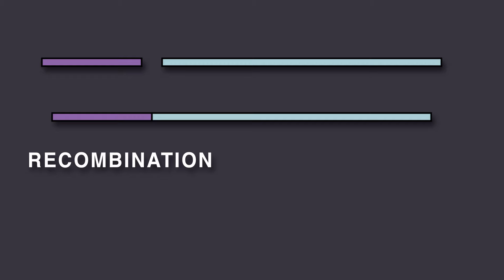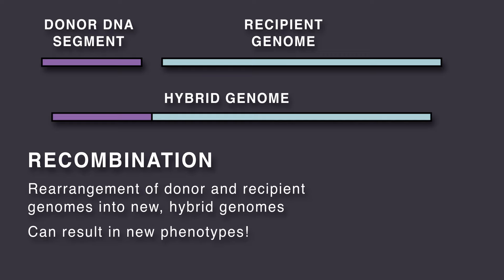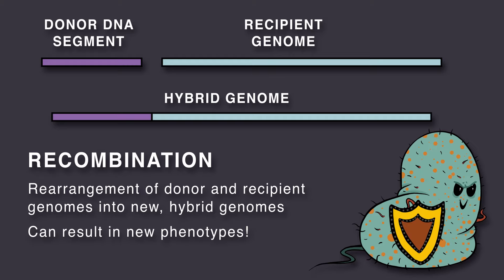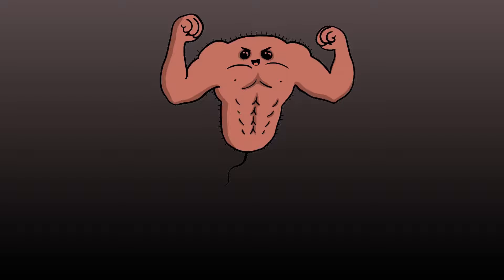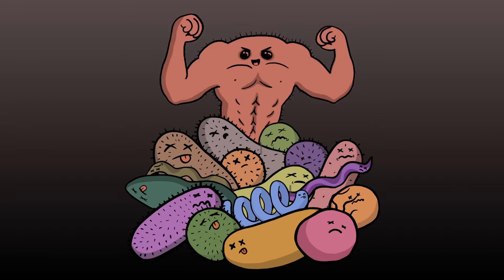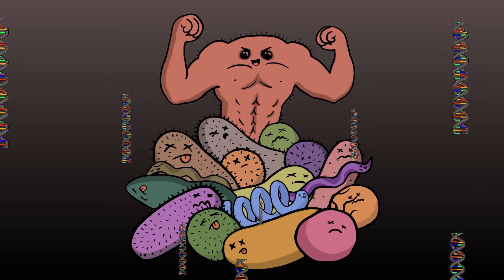Recombination is the rearrangement of donor and recipient genomes into new, hybrid genomes. This can result in new phenotypes — for example, the bacteria can acquire pathogenicity or antibiotic resistance. Some competent bacteria actually kill non-competent bacteria to release DNA for transformation.